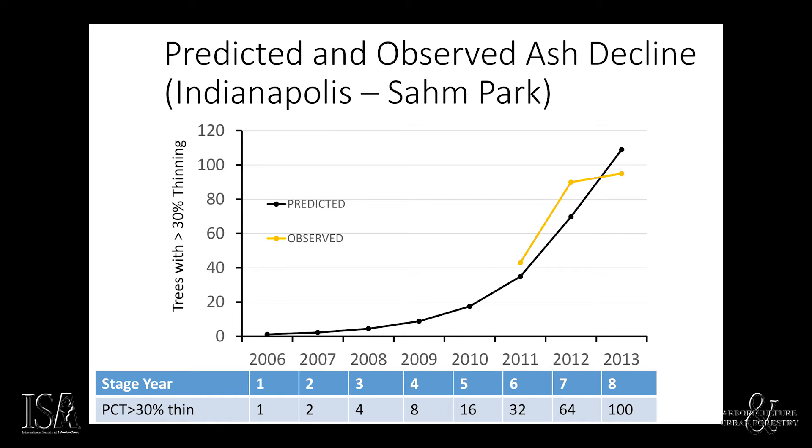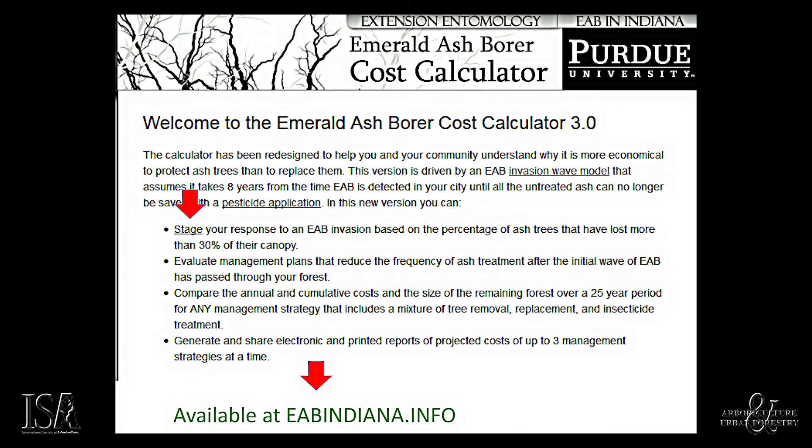Armed with a sampling tool, cities can see where their forest falls on the timeline of ash decline. This can convey the sense of urgency needed to get the public to fund a treatment program before it becomes too late to save their ash forest. Our model of ash forest decline has been incorporated into a web-based calculator that compares the cost and benefit of different responses to EAB at different stages of the EAB invasion.